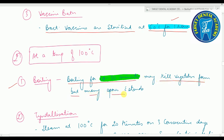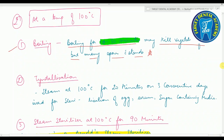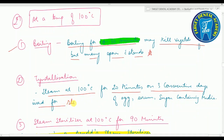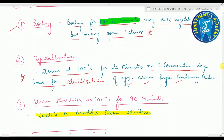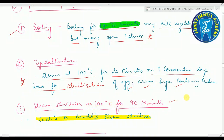Second method at 100°C is tyndallization — steam at 100°C for 20 minutes on three consecutive days — used for sterilization of egg serum and sugar-containing media. Last is the steam sterilizer at 100°C for 90 minutes, also known as COTS or Arnold's steam sterilizer.